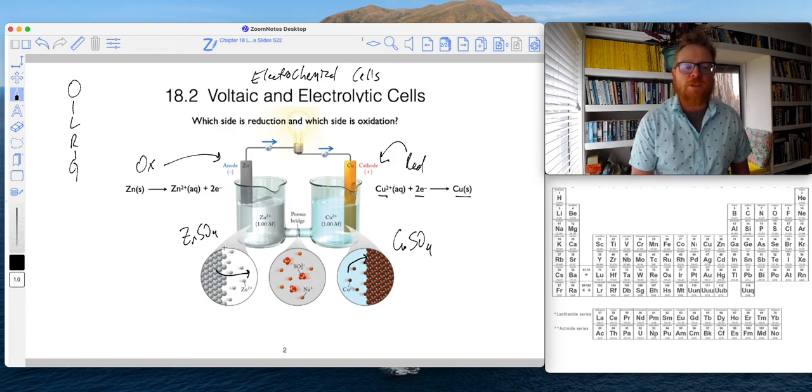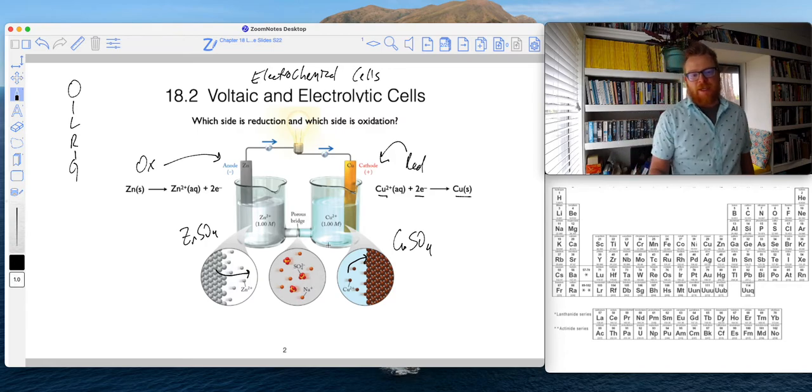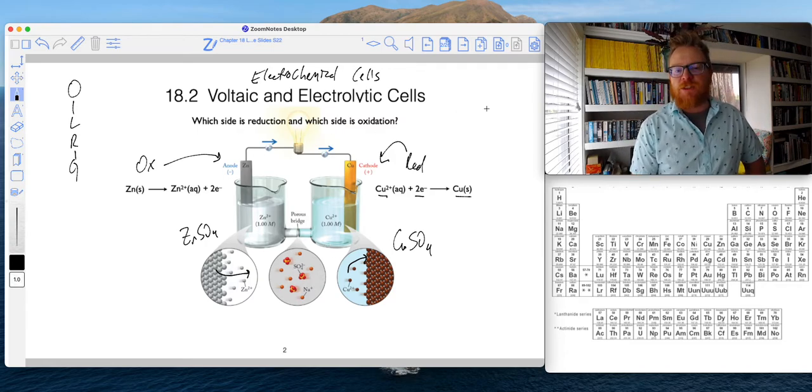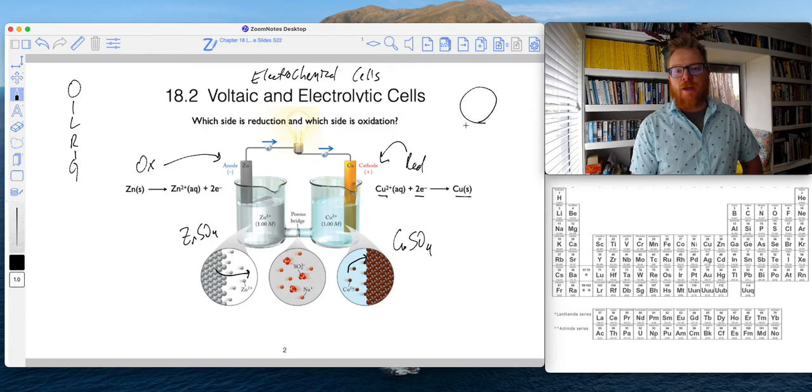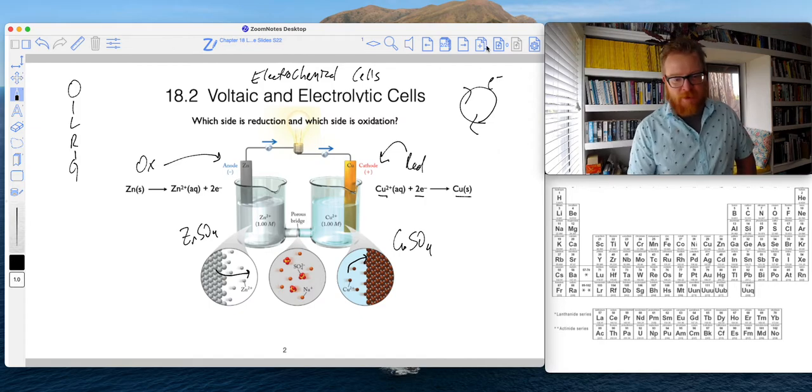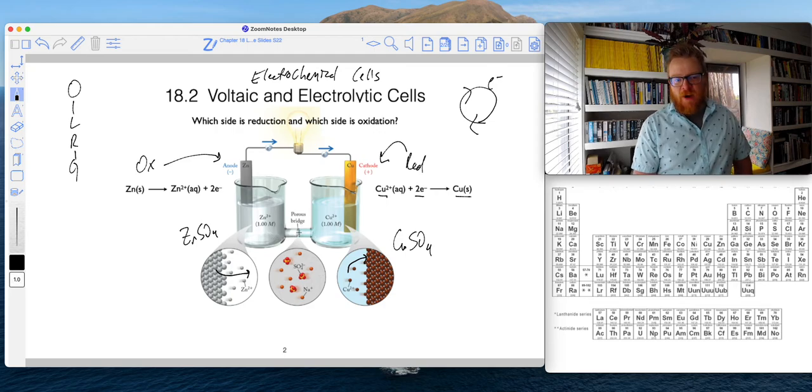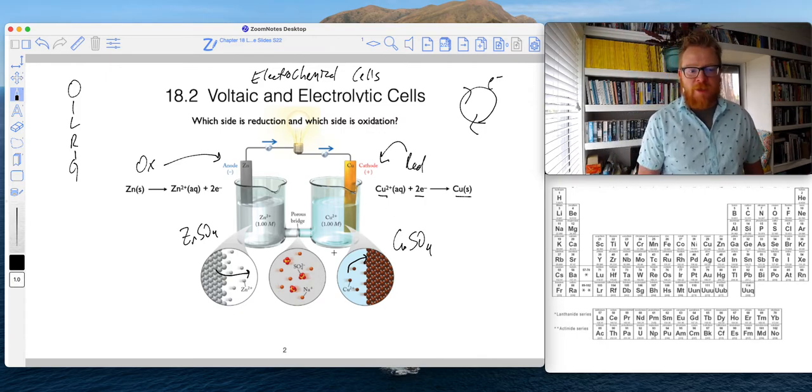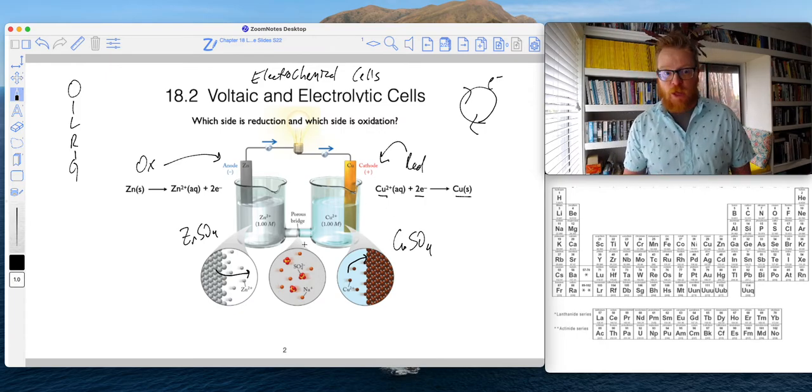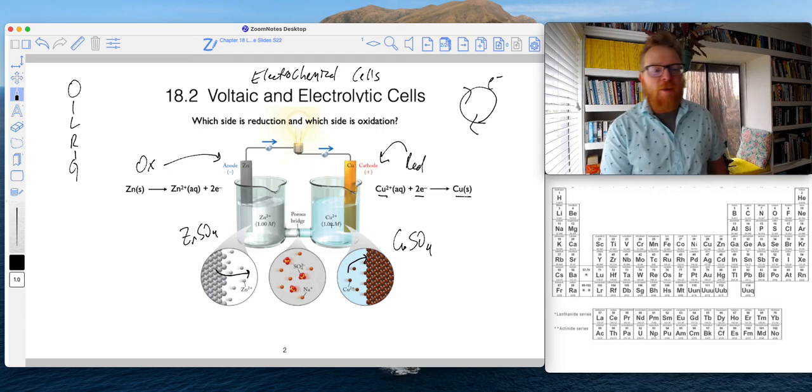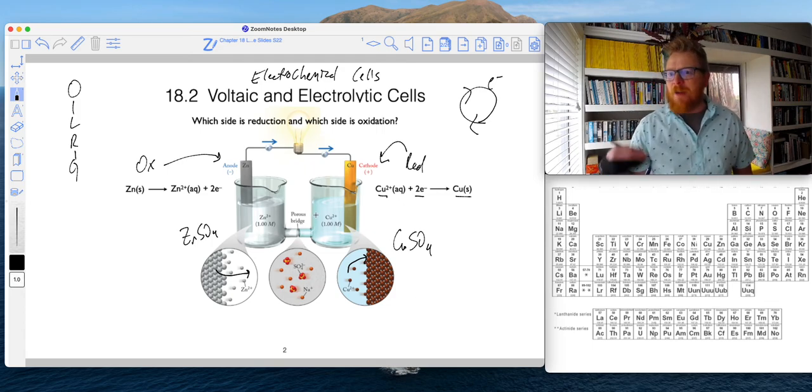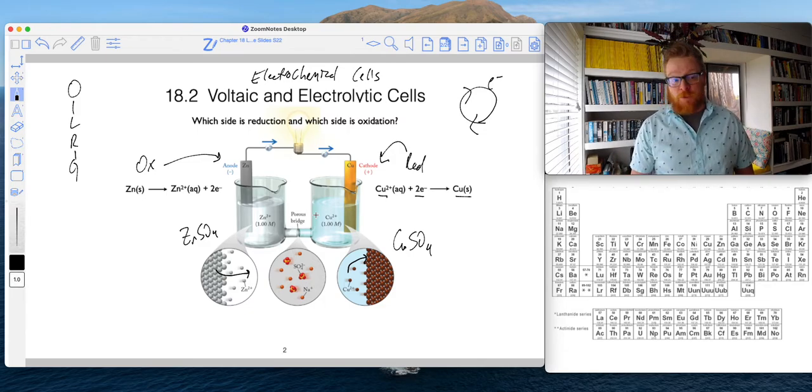This porous bridge becomes rather tricky because we have to have a complete circuit for the electrons to flow round and round. In this porous bridge, anions are actually able to flow through. The pore sizes are small enough that allow anions to flow. You might be thinking, how do these charges not build up on either side? That's because of the porous bridge.